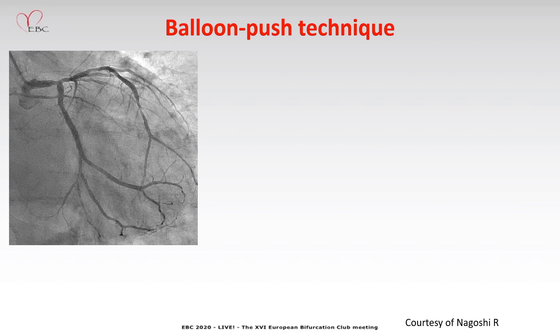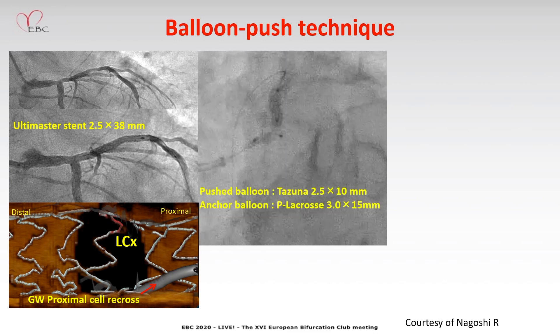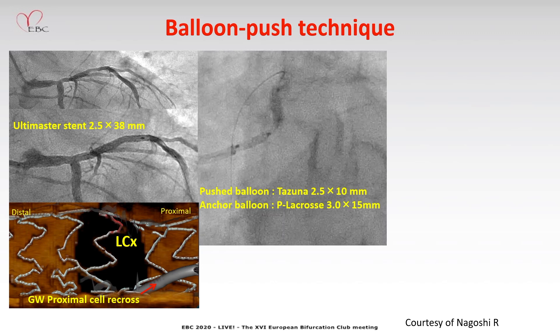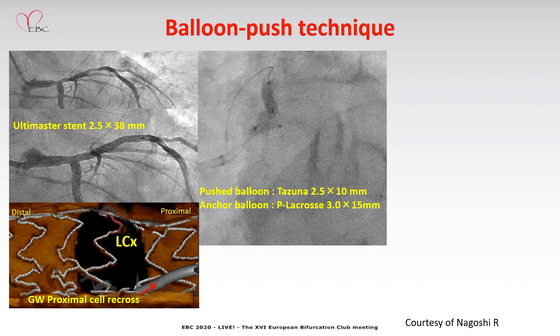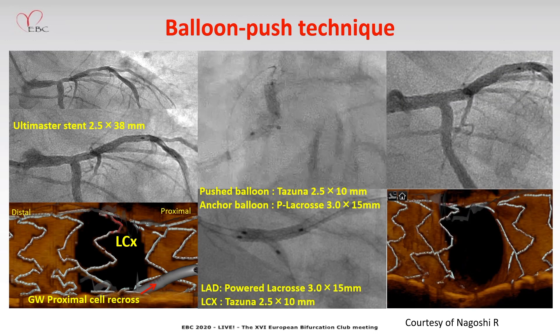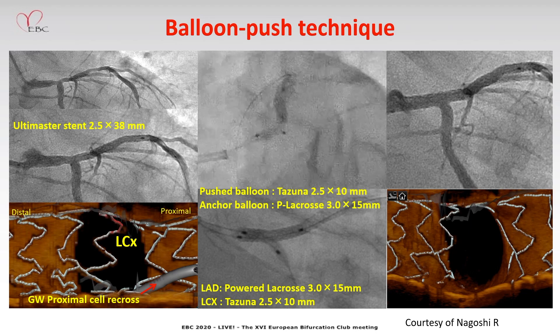This is the left main bifurcation region. Crossover stenting was performed, guidewire recrossing in the proximal cell. Under the anchoring of the LAD balloon, a 2.5 mm short balloon was pushed from the left main to the side branch axis. Final kissing balloon was performed. Here you can see good expansion was achieved at the side branch ostium and no stent struts in the side branch ostium.